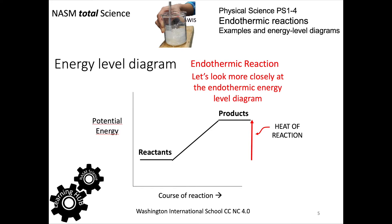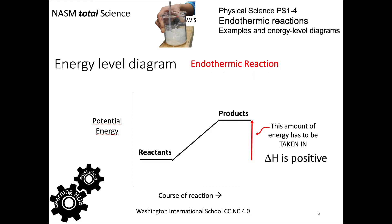We're going to look more closely at the endothermic energy level diagram. The energy that needs to be taken in is called the heat of reaction — it's called enthalpy and given the symbol delta H. For an endothermic reaction, delta H is positive.